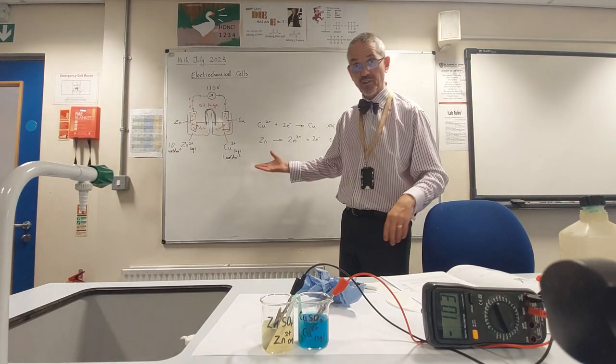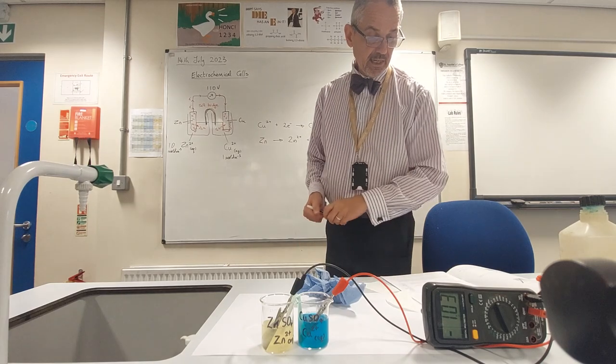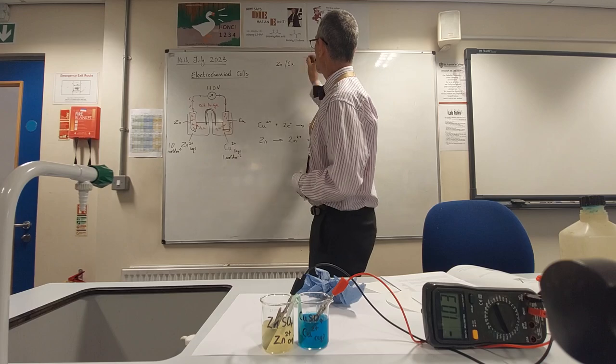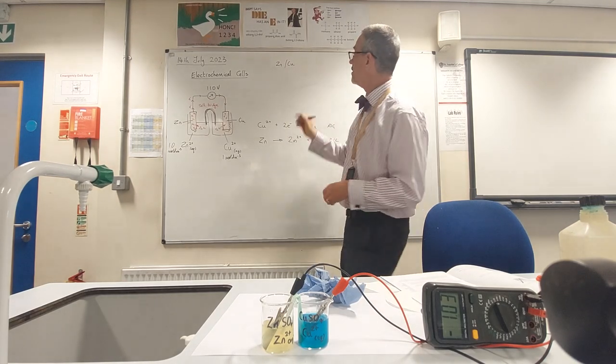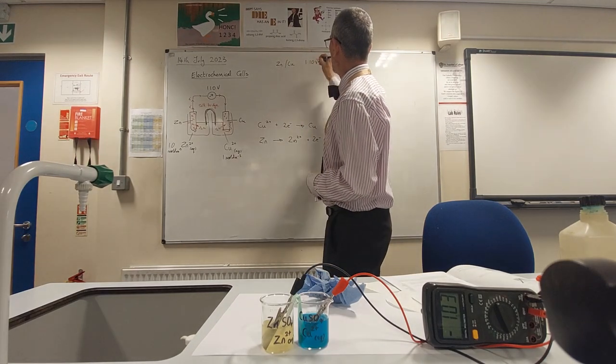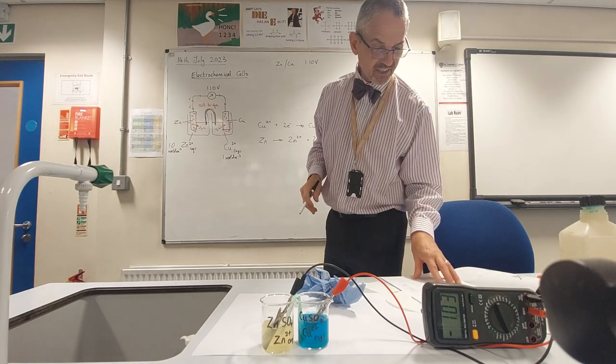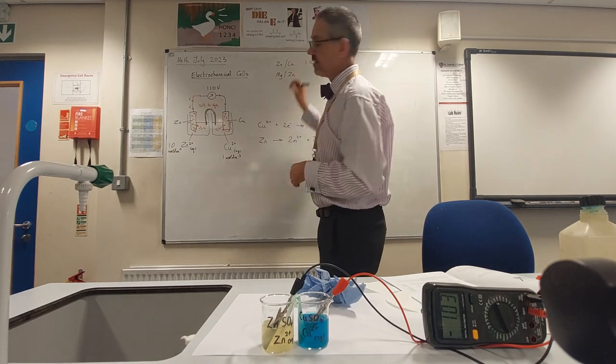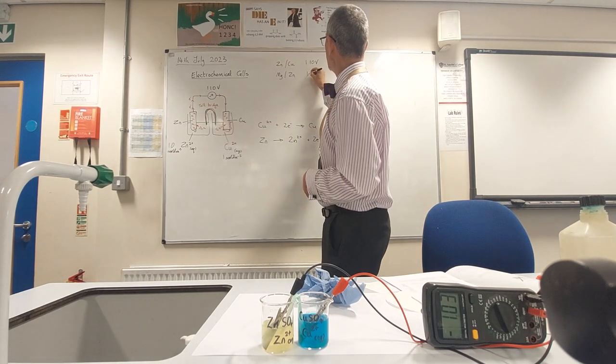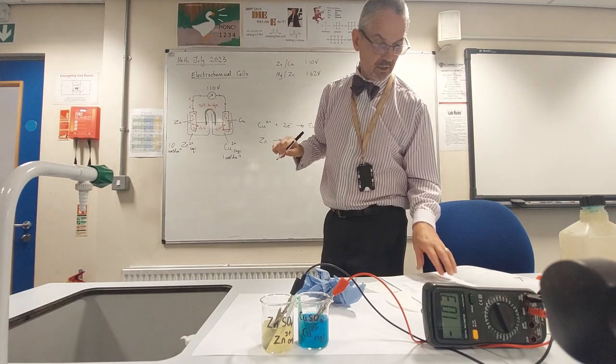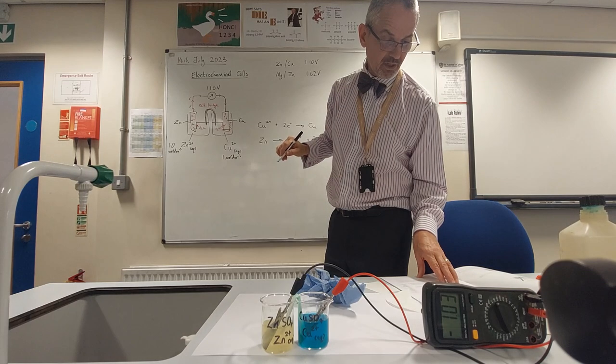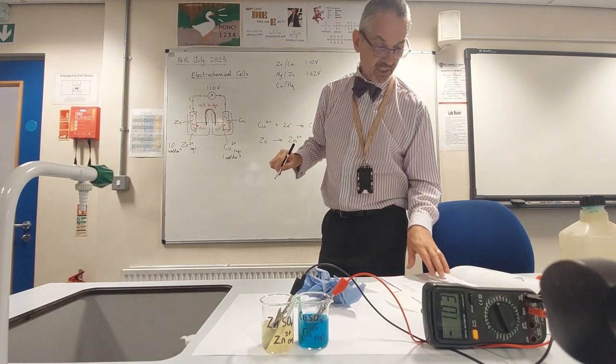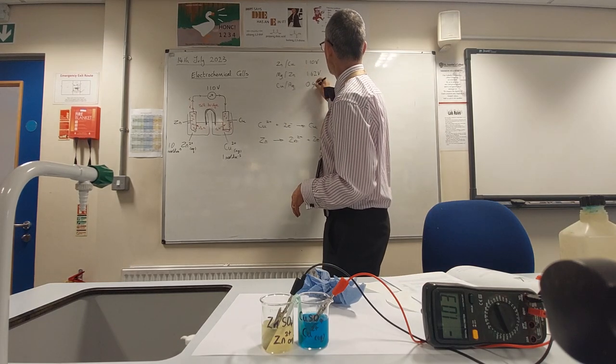Obviously we could do this with other metals as well. What have we got here? We've got zinc and copper. When we have the zinc-copper electrode together we get 1.1 volts. I've got some other data here: magnesium and zinc together gives 1.62 volts, zinc and copper, copper and silver together would give 0.46 volts.